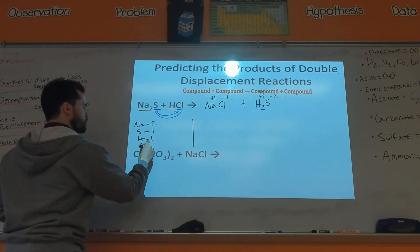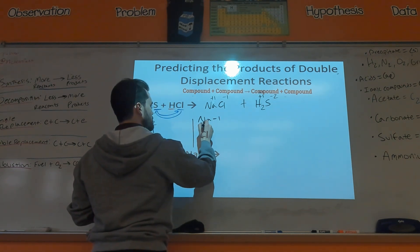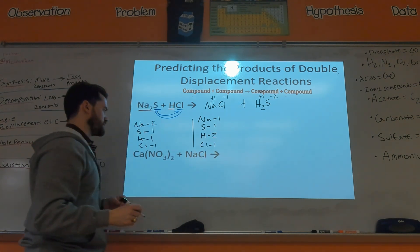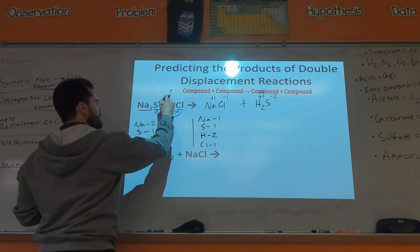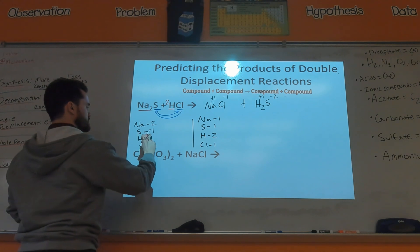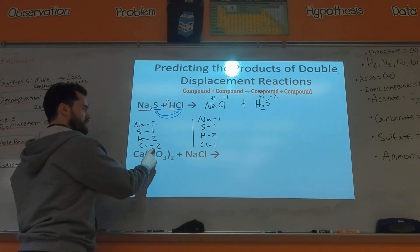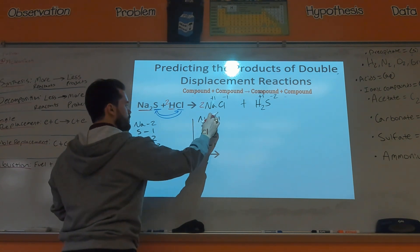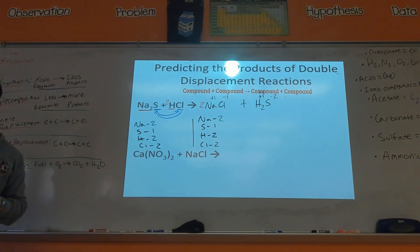Now let's balance Na₂S + HCl → NaCl + H₂S. Left side: two sodiums, one sulfur, one hydrogen, one chlorine. Right side: one sodium, one sulfur, two hydrogens, one chlorine. Fix the hydrogens by doubling the HCl. Now I need to fix the chlorines and sodium, so double the NaCl. Everything is balanced.